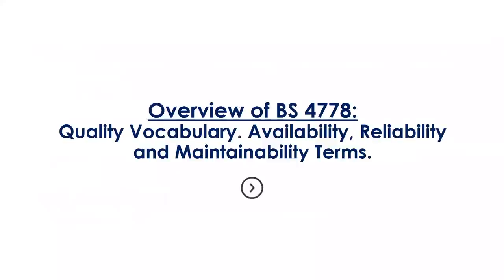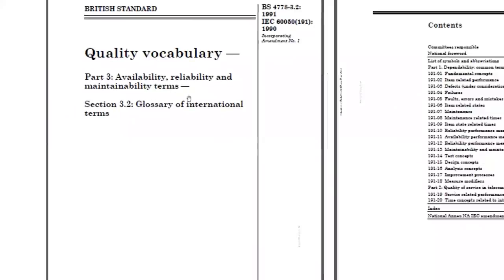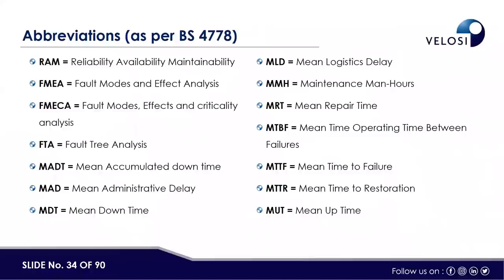An overview of BS 4778: this standard contains the quality vocabulary, availability, reliability, and maintainability terms. The index covers fundamental concepts, item-related performance, defects, failures, and so on. Most of our audience may be learners or university students who can take help from this standard, while more experienced people may have more robust references. There could be slight definition differences between American and European standards, but the overall concept remains the same. Familiarizing with these abbreviations will help when reviewing the case study.